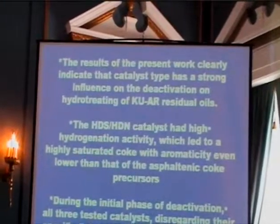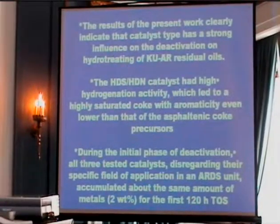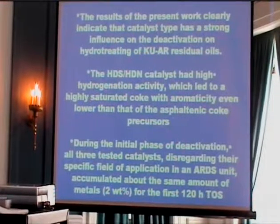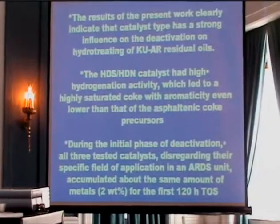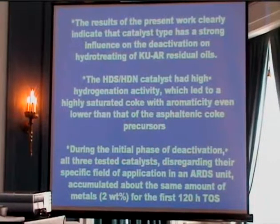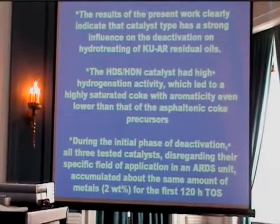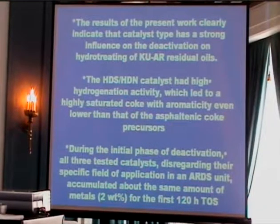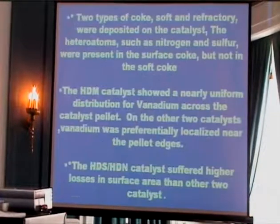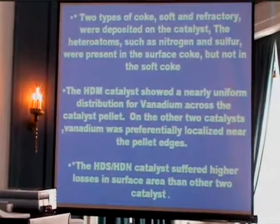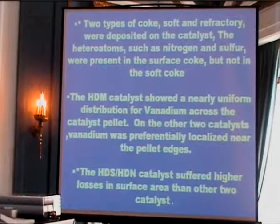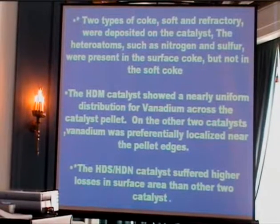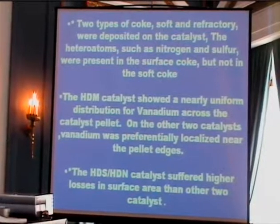Some highlights and major conclusions: the results of the present work clearly indicate that the catalyst type has a strong influence on deactivation in hydrotreating of Kuwait atmospheric residue. Catalyst C (HDS/HDN) has high hydrogenation activity, which leads to highly saturated coke with aromaticity even lower than that of the asphaltene coke precursors. During the initial phase of deactivation, all three catalysts deposit approximately 20% carbon within 120 hours on stream. Two types of coke — soft and refractory — were deposited. The HDS catalyst showed uniform vanadium distribution, while nickel distribution was different. Catalyst HDS/HDN suffers higher losses in surface area and pore volume compared to the other two catalysts.